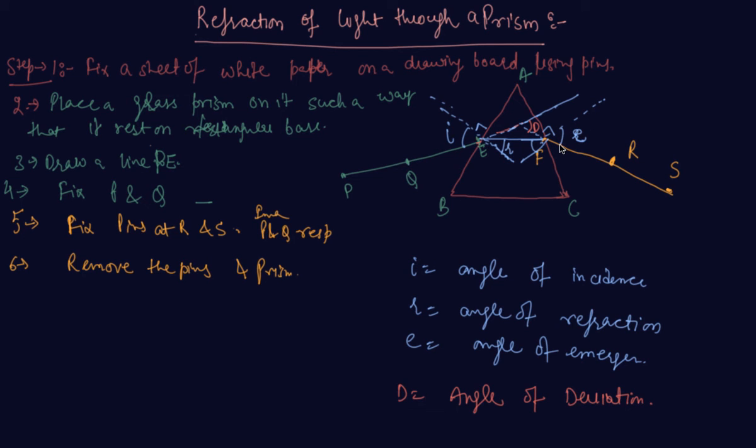So students, so far we have discussed about how reflection of light through a prism occurs. If you have any doubt or any question based on what is angle of incidence, reflection, emergence, and angle of deviation...